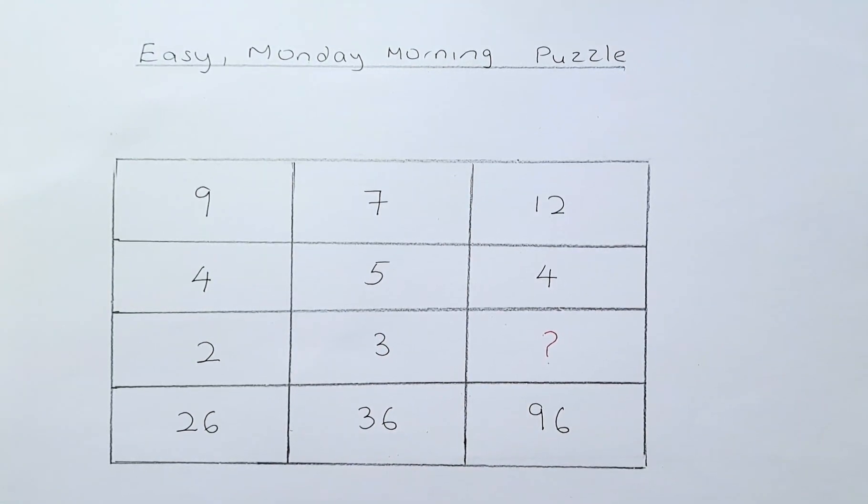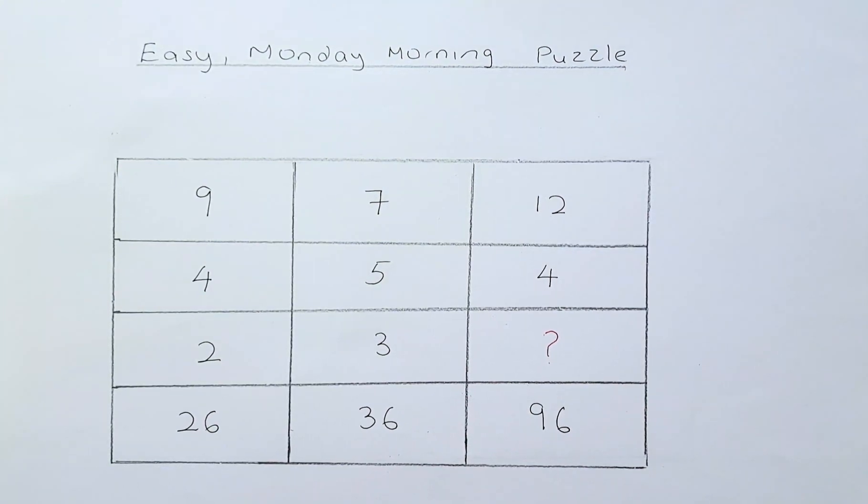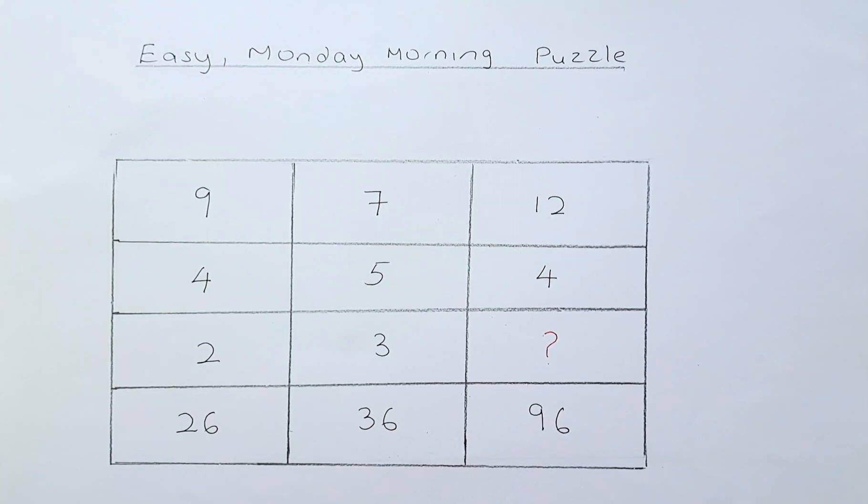For example, 9, 4 and 2. You must find the relationship to get 26. And also 7, 5, 3 in the second column to get the number 36.